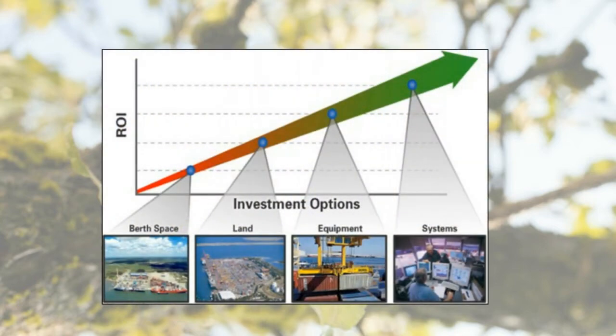If you look at this little diagram, you see that they lie on the very far right. They lie in the category of systems — not so much in buying new equipment, land, or infrastructure, but in the systems. And what we mean by systems: it is software, it is operational processes, and it is data.